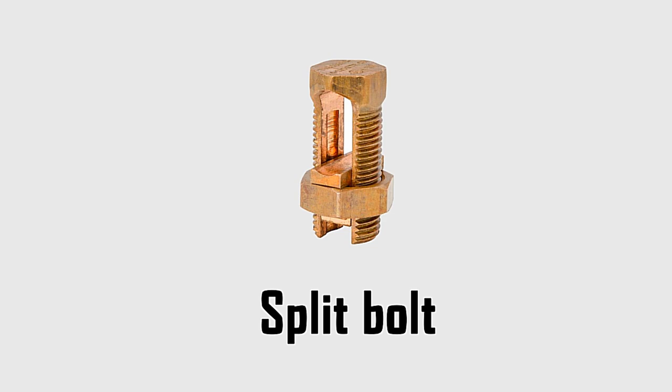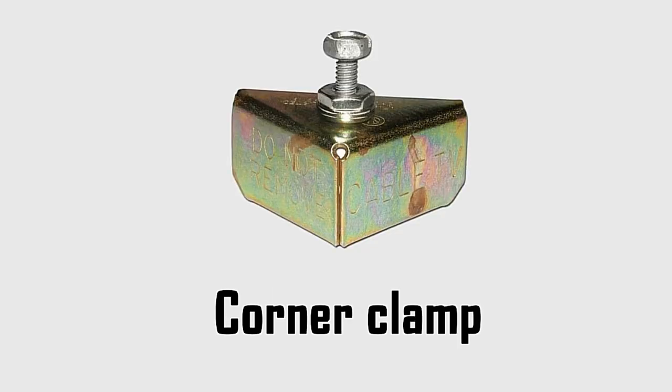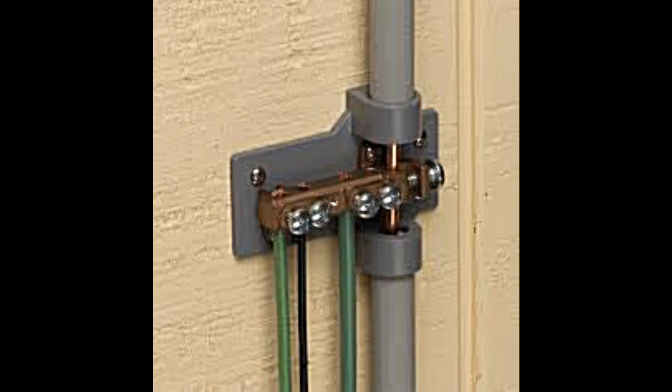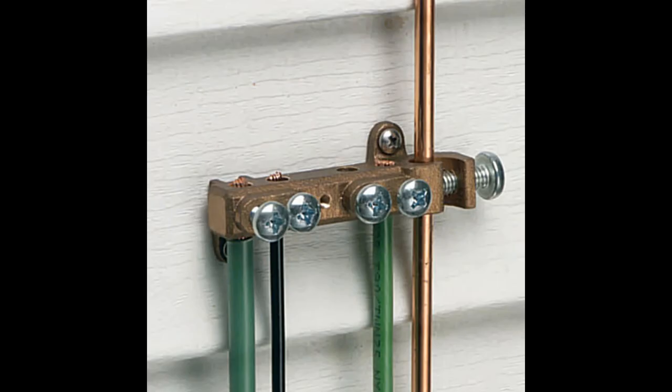You can use what we call the split bolt, a corner clamp for your meter box. But the best way to do this is to use what we call the inter-system bonding connector. Now what it is, it's a grounding connector with multiple ports. So if ever in the future you decide to install any extra antennas, you're going to have the extra ports readily available, without having to add another grounding lug or split bolt or anything like that.